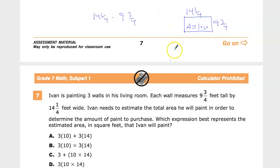We're estimating, so we'll just round them. 9¾ is good enough to be 10. 14¼, let's go down and make it 14. And then there's 3 walls.